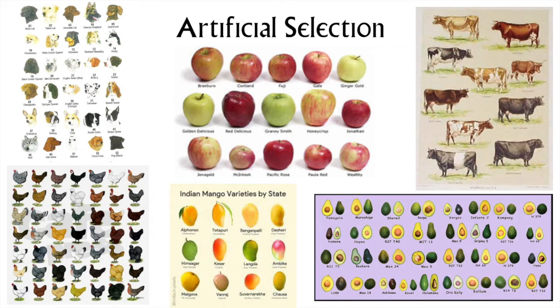Just about every domesticated and cultivated commodity that we have is the product of selection by humans. On this slide you can see just a few examples of the products of artificial selection: breeds of dogs, chickens, cattle, varieties of apples, avocados, mangoes — all well-documented examples of humans' ability to change populations of organisms through non-random selection.